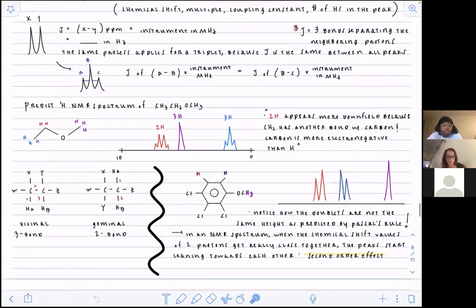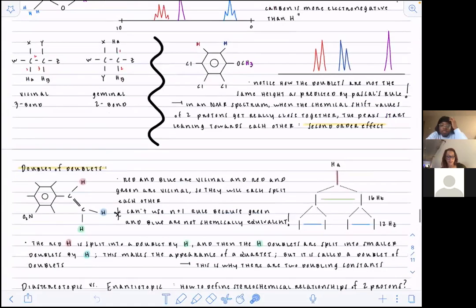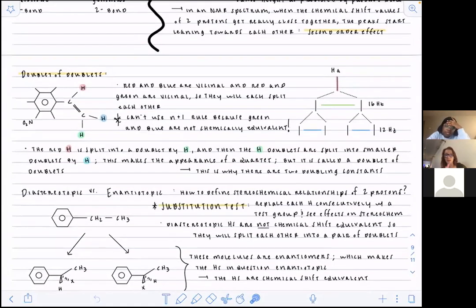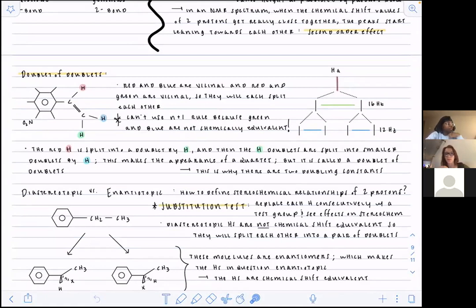The same idea applies to the concept of the doublet of doublets. When we have two hydrogens attached to an alkene that are chemically non-equivalent, the hydrogen we're looking at — the red one — is not on the same side as the two hydrogens on the other side. All of them are chemically inequivalent and they all give off different signals, but we're specifically focusing on the red hydrogen because that's the one that creates a doublet of doublets.